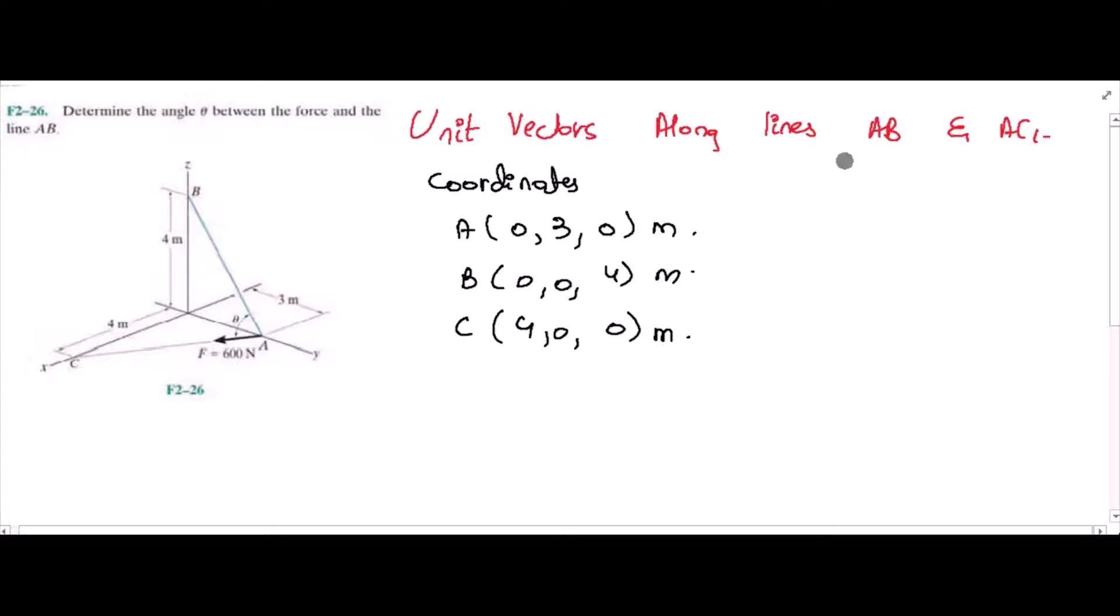Now, to find the unit vectors along the lines AB and AC, unit vector AC represents the direction of force. UAB is equal to RAB, position vector over its magnitude.